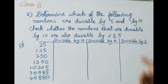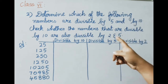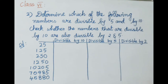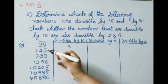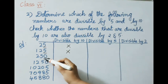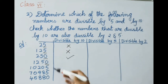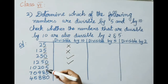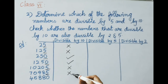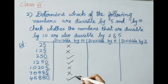The second question asks us to determine which numbers are divisible by 5 and by 10, and check whether numbers divisible by 10 are also divisible by 2 and 5. For divisibility by 10, the ones place must be 0. Checking: 25 and 125 have 5 in ones place — not divisible by 10. 250 and 1250 have 0 — divisible by 10. 10205 and 70985 have 5 — not divisible by 10. 45880 has 0 — divisible by 10.